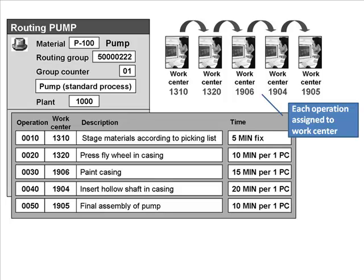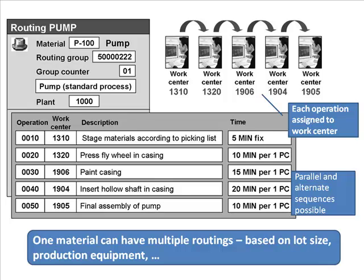For routing: each operation is assigned to a work center, parallel and alternative sequences are possible, and one material could have multiple routings. We distinguish between configurable routings for a configurable material versus a regular material having multiple routings — for example, for different lot sizes or different plants using different production processes, which would have completely different routings.